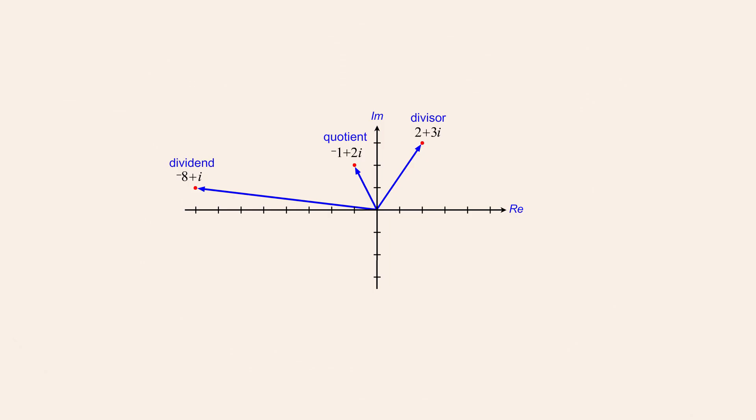As a general example, let's call the dividend z1, the divisor z2, and the quotient z3. In the previous lecture, we introduced two parameters that describe the direction and length of a complex number's vector representation. The first parameter, called the argument of the complex number, describes the vector's direction and is defined as the angle of the vector from the positive real axis.